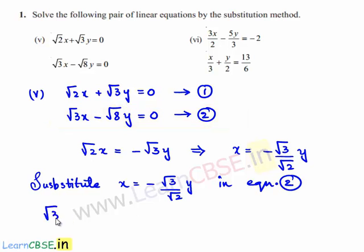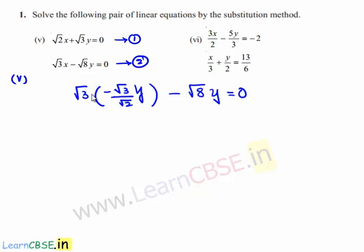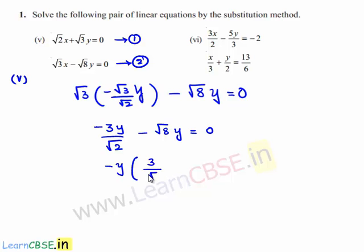We get root 3 times of minus root 3 divided by root 2 times y, and here we have minus root 8·y. So root 3 multiplied by minus root 3 gives minus 3y divided by root 2, and this minus root 8·y is equal to 0. Now we can take minus y as a common factor. We get 3 divided by root 2 plus root 8 is equal to 0.